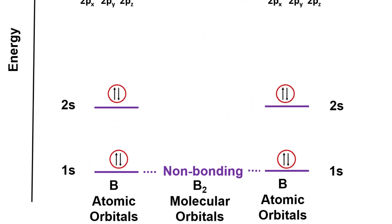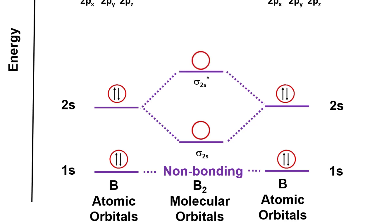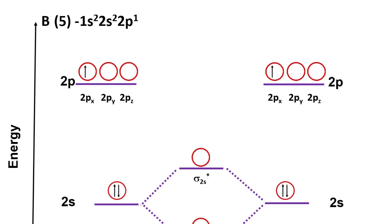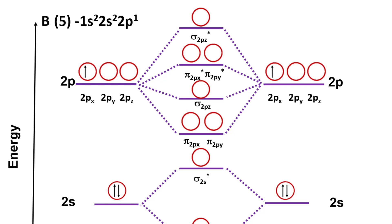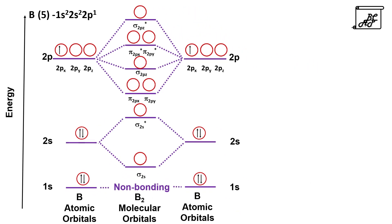As seen for lithium and beryllium, the 2s orbitals overlap with each other to form one bonding orbital, sigma 2s, and one antibonding orbital, sigma star 2s. Among 2px, 2py, and 2pz, the 2px and 2py participate in pi bonding, forming pi 2px and pi 2py bonding and pi star 2px and pi star 2py antibonding molecular orbitals. The 2pz orbital participates in sigma bonding, forming sigma 2pz and sigma star 2pz. Now we fill the electrons: there are 3 outermost electrons per boron atom (2s2, 2p1), giving a total of 6 electrons. Two electrons go to sigma 2s, two go to sigma star 2s, and the remaining 2 electrons remain unpaired according to Hund's rule in pi 2px and pi 2py orbitals.